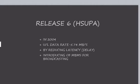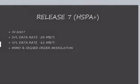Release 6 introduced HSUPA, used for uploading, with an upload data rate of 5.74 MB per second, launched in 2004, and it also reduces latency. Release 7 supports both downloading and uploading, with a download data rate of 28 MB per second and an upload data rate of 11 MB per second.